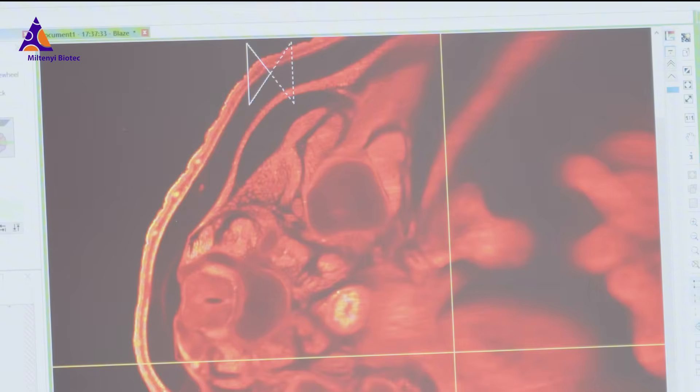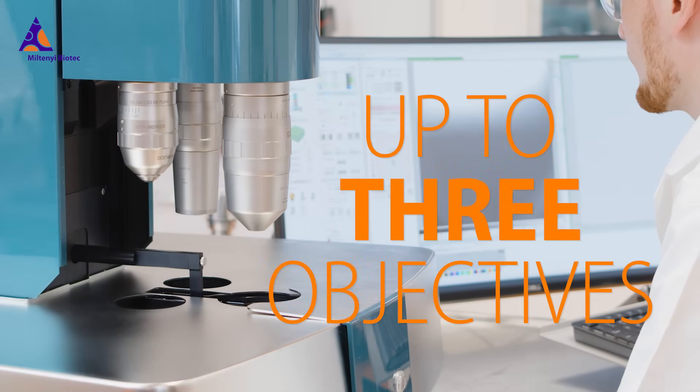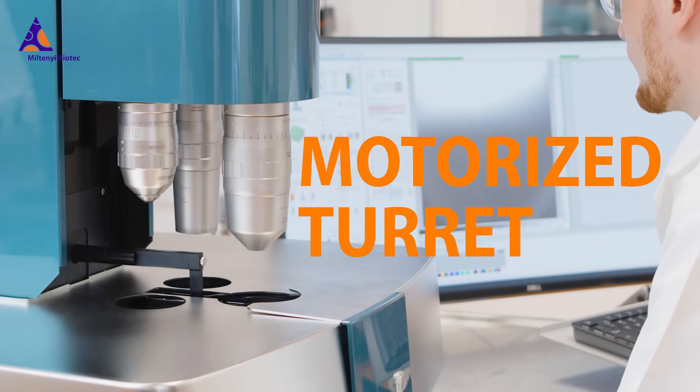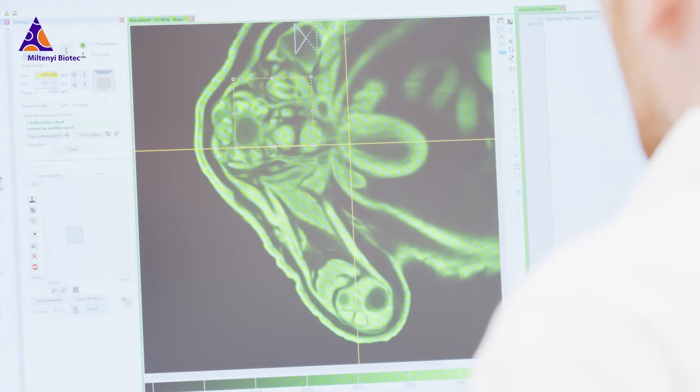The Ultra Microscope Blaze is the only light sheet instrument that can hold up to three objectives. A motorized turret allows fully automated switching of the lenses and enables you to get an overview of the sample and then analyze sub-cellular details without manual handling.